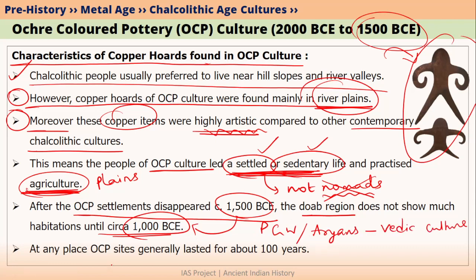Since the OCP people were living in plains, there was always a risk of flooding and water logging. That is why at any OCP site, generally these people did not live for more than 100 years. This is another reason why they did not build big towns like Daimabad or Inamgaon as seen in the Jorwae Chalcolithic culture.